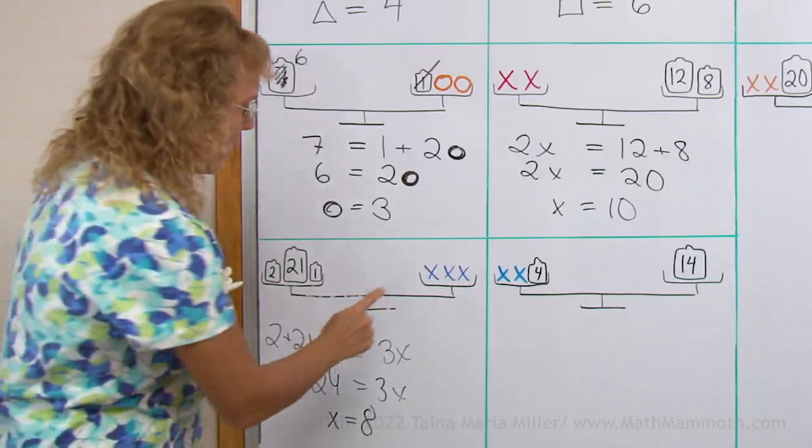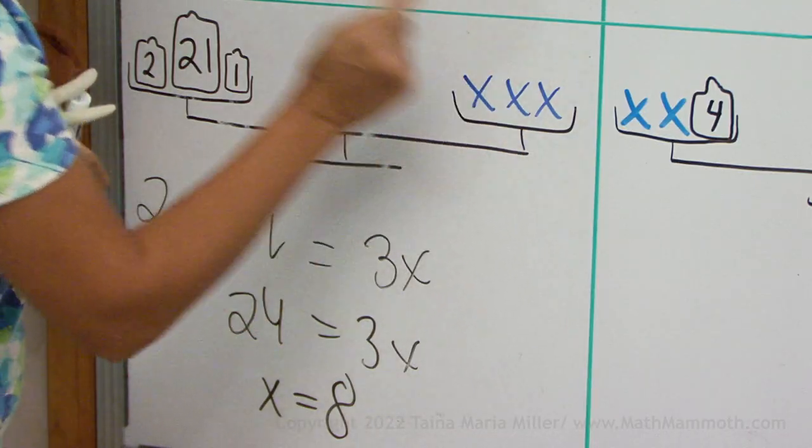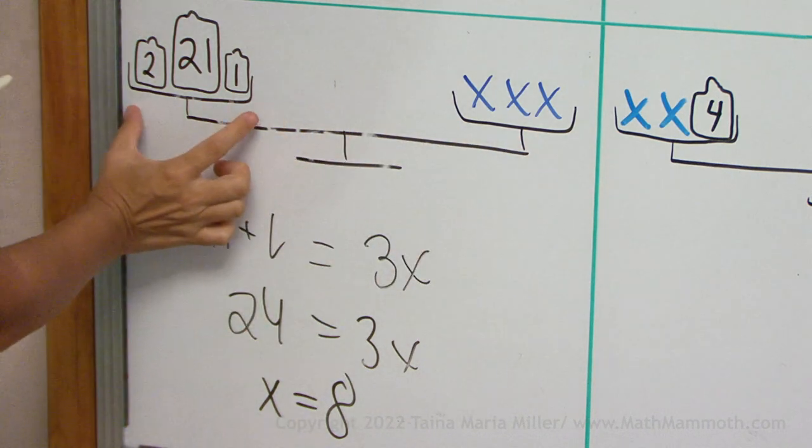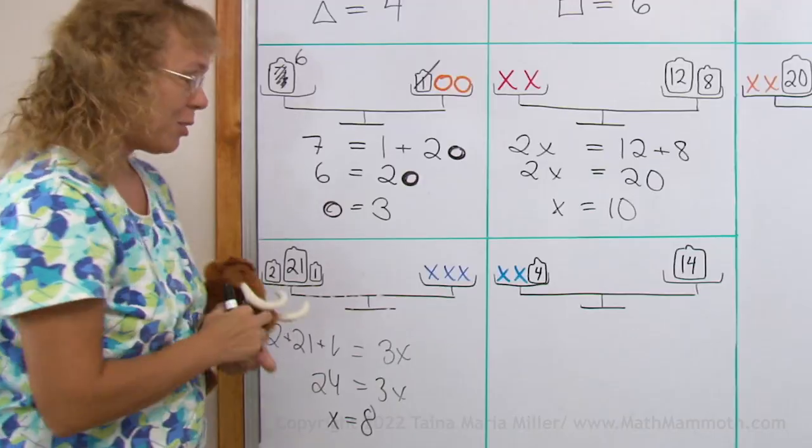And to check, if x is 8, you have 8, 8, 8. That's 24 on this side. And over here also, yes, we have 24. So it checks. Thanks.